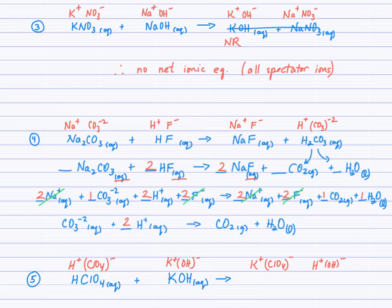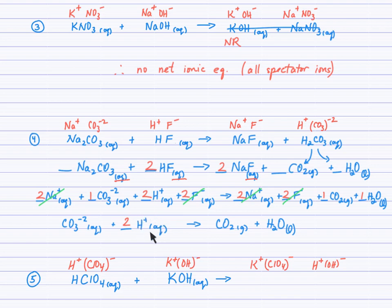Canceling spectator ions: the 2 sodium ions are identical on both sides, as are the 2 fluoride ions. Copying down what's left gives the net ionic equation showing how CO₂ gas is formed — specifically, the carbonate ion and the hydrogen ion from the acid are responsible for forming carbon dioxide gas and water.